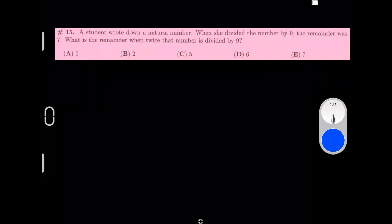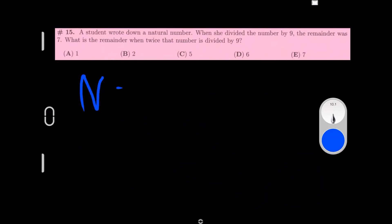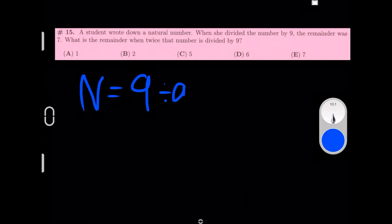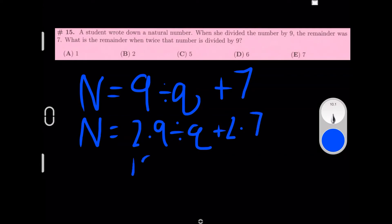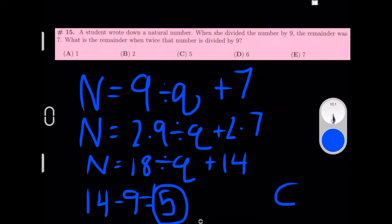A student wrote down a natural number. When she divided the number by 9, the remainder was 7. What is the remainder when twice that number is divided by 9? Let's use N for natural number and Q for quotient. So it would be N=9Q+7 because that was the remainder. Because what's the remainder when twice the number is divided by 9, it would be N=2×9Q+2×7. So we would get N=18Q+14. Because we're dividing by 9 and our remainder right now is 14 and that's greater than 9, we can subtract 9 from that. 14-9 gets you 5, so your remainder would be 5 and option 5 is C.